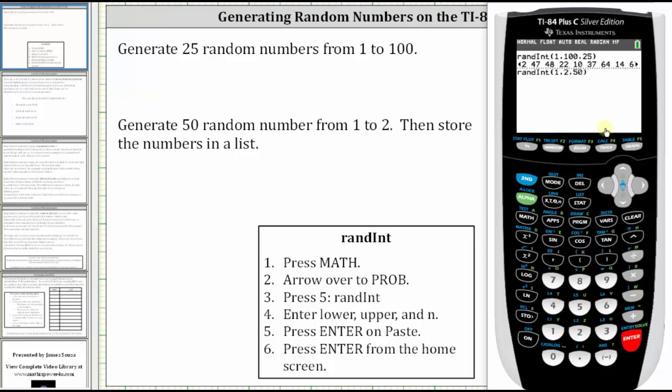And now before we press ENTER again, we want to store the random numbers in a list. We will use L1. So we press STO→, and then L1 is 2nd, and then number 1.